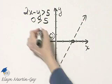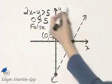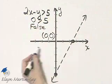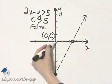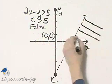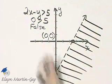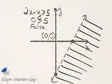0 is greater than 5, that is a false inequality, which means I do not shade the side of the boundary line where the test point lies. I shade the other side of the boundary line. And I am shading then all ordered pairs that will make this a true inequality.